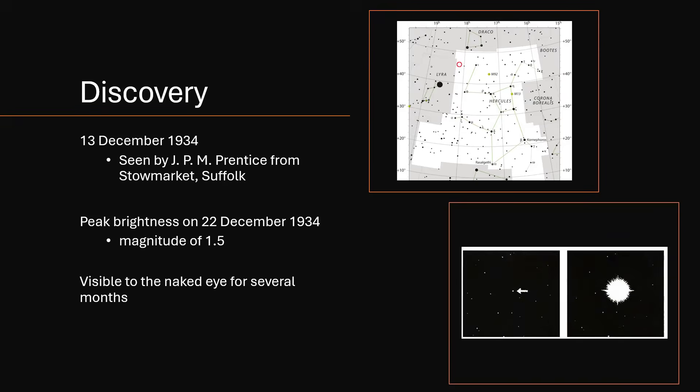It was on the 13th of December 1934 when J.P.M. Prentice from Stowmarket in Suffolk, not very far from here, discovered that a new star had appeared in the constellation of Hercules that hadn't been there before. And this continued to brighten up until the 22nd of December 1934, magnitude 1.5, a very bright star indeed, visible to the naked eye and visible for several months.